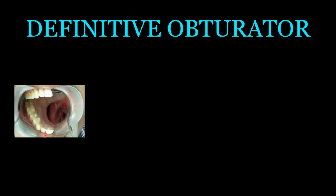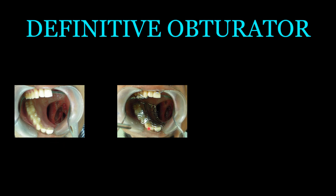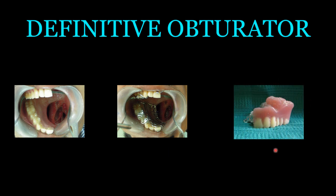For the definitive or permanent obturator, the mouth is first prepared: hopeless teeth are extracted, periodontal therapy is done, carious teeth are restored, and then impressions are made. A metal framework is fabricated following all the designs and principles of cast partial dentures, followed by acrylization with a bulb depending on the extension of the defect. This definitive obturator is only given when tissue changes are unlikely to occur and healing is complete — approximately two to four months after surgery.